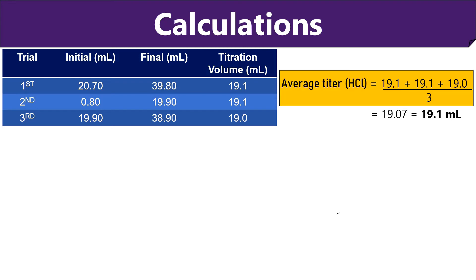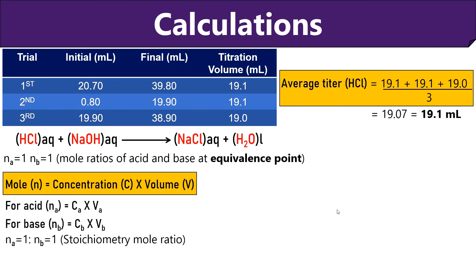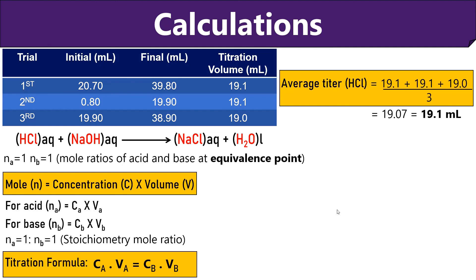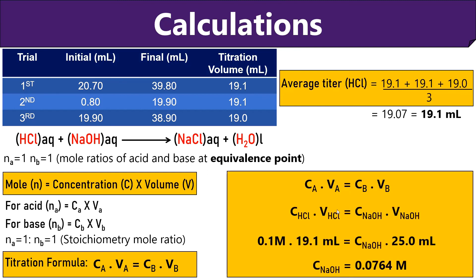Then in this way we can calculate the average titer. At the equivalence point, neutralization of HCl with NaOH occurs and the mole ratios of HCl and NaOH become equal to 1. We know that moles equal the product of concentration and volume. So we can modify this equation for an acid and a base: for acid, Na = Ca × Va, and for base, Nb = Cb × Vb. As the mole ratios of acid and base become the same at the equivalence point, a titration formula can be represented by the given equation. Now putting all the values into the titration formula, we can find out the concentration of NaOH.